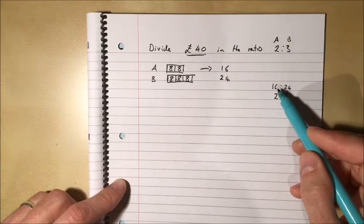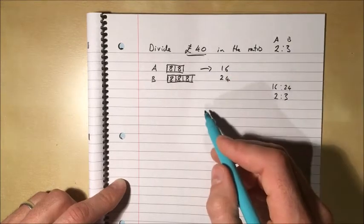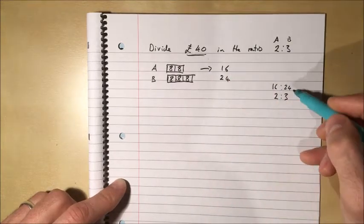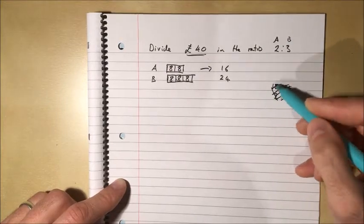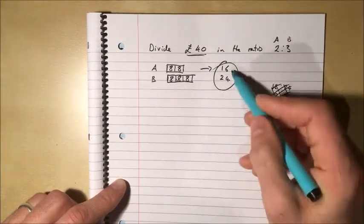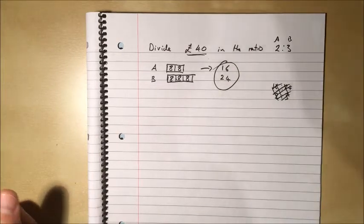Don't make the mistake that some people do of finding this, writing the answer as £16 to £24 and then cancelling the ratio down and ending up back with 2:3. That won't get you the marks. The answers that we're looking for is A gets £16 and B gets £24.